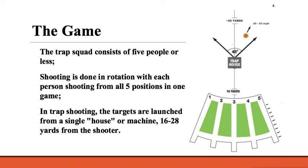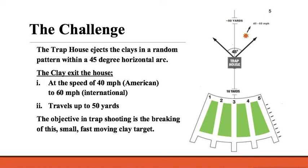The game is built around five shooting positions arranged in a semicircular arc around the trap house. From this trap house, the discs are launched at 40 to 60 miles per hour and travel about 50 yards before they come in contact with the ground. Shooting is done from each of the five positions in rotation, from distances of 16 yards at the closest to a maximum handicap of 28 yards away from the trap house.